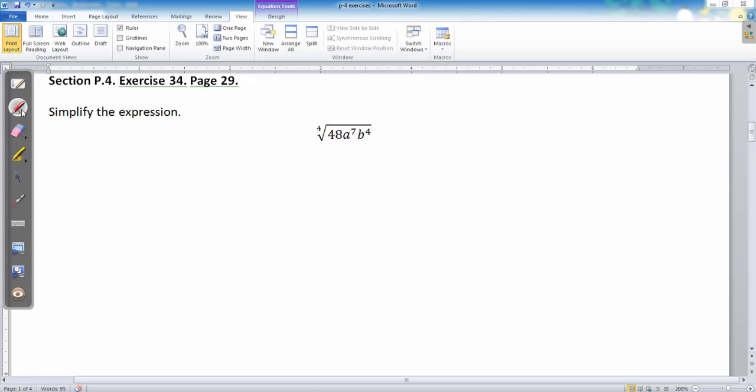The next problem we're going to look at is exercise 34 on page 29. This is a nice problem because it builds on what we were just doing before. We need to simplify this route, so we need to do the same thing we've been doing with the number, but the variables are arguably even a bit simpler because they're already in the exponential form, so we can already use the shortcut on them.